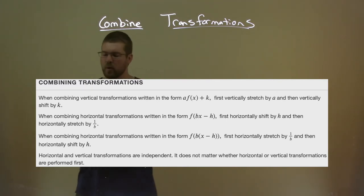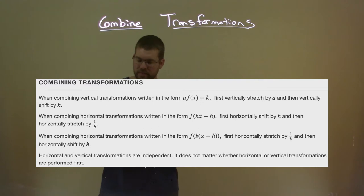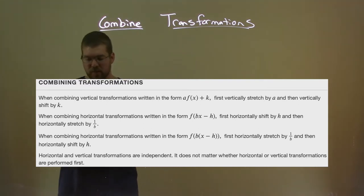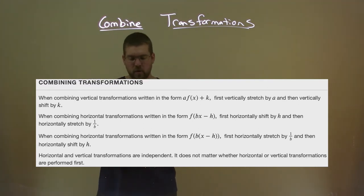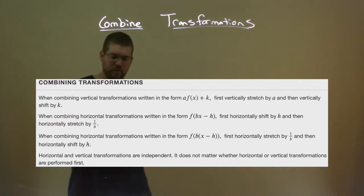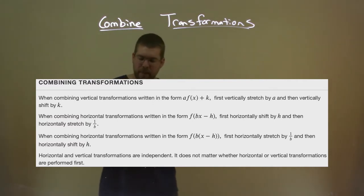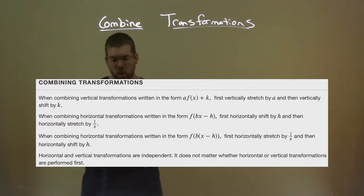When combining horizontal transformations written in the form f(B times, in parentheses, X minus H), first horizontally stretch by 1 over B, and then horizontally shift by H. Horizontal and vertical transformations are independent. It does not matter whether horizontal or vertical transformations are performed first.